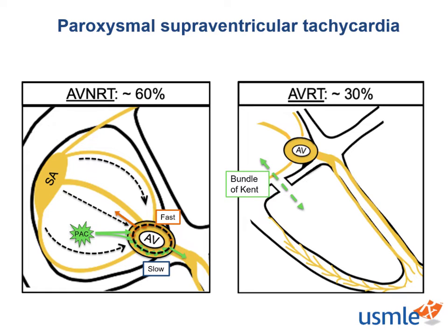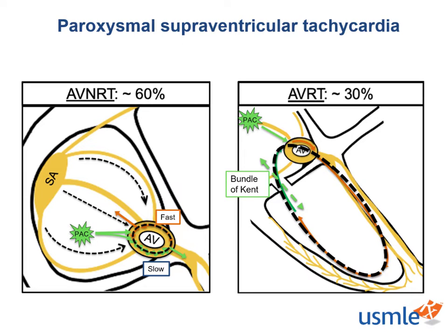In Wolff-Parkinson-White, a normal sinus heartbeat can be conducted to the ventricles down both the regular AV nodal pathway and the accessory pathway. However, a reentry cycle can be created if a beat — often an ectopic atrial beat — is conducted anterograde down only one pathway, usually the AV node pathway, and retrograde back up the other pathway, usually the accessory pathway. This retrograde impulse can depolarize the atria or the AV node directly and immediately reenter the AV nodal conduction pathway down to the ventricles, creating a reentry circuit. This often bypasses the rate-slowing mechanism of the AV node, causing excessively frequent ventricular depolarization and a very sudden, rapid heart rate.